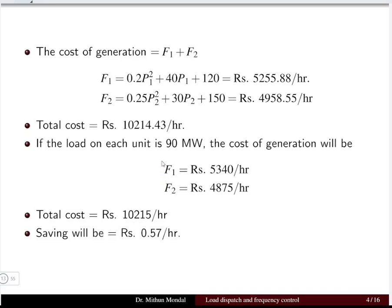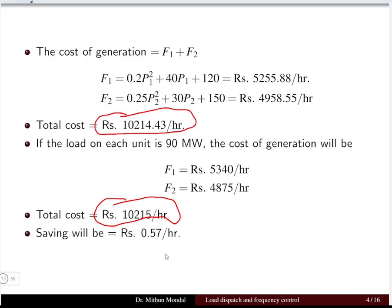The total cost under both conditions is compared, and subtracting the two values gives a net saving of 0.57 rupees per hour for the power plants.